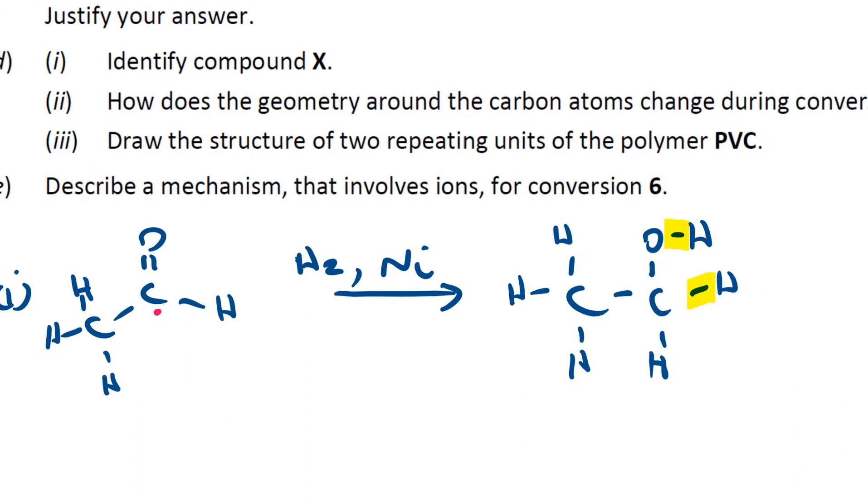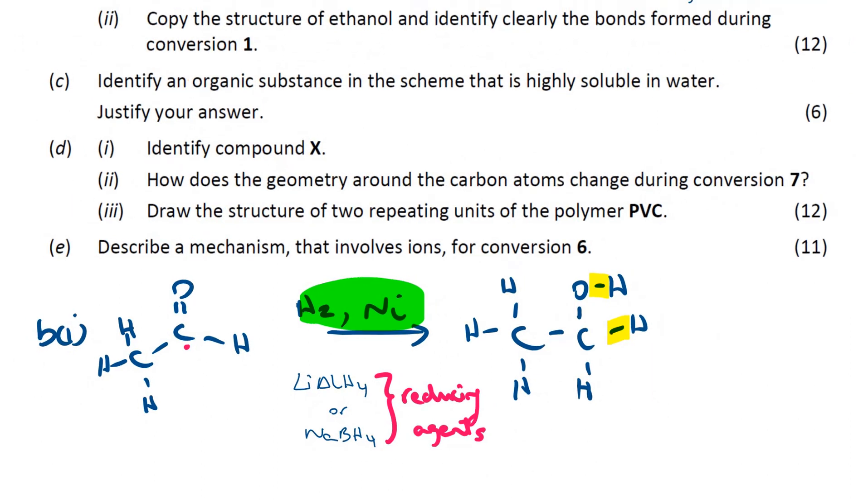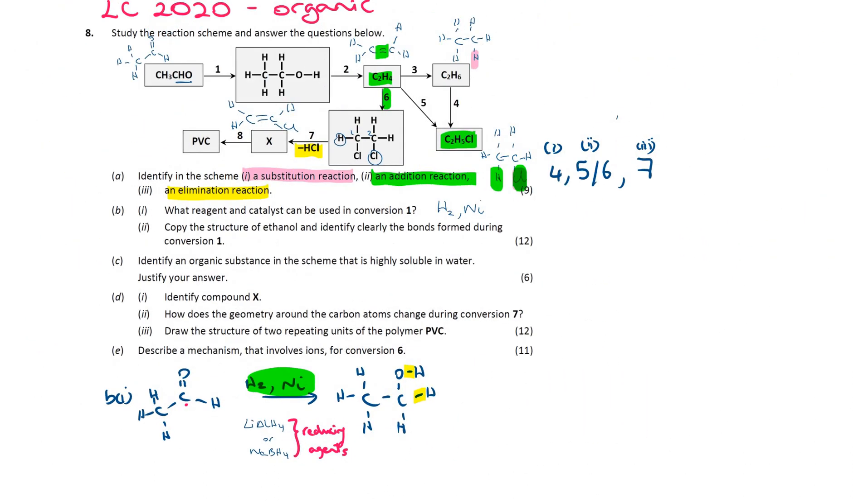I meant to say, actually, that other reagents you could use are lithium aluminum hydride or sodium borohydride. They're common reducing agents used in research. So, they are reducing agents. But, if you want to just remember one hydrogen and nickel, it works perfectly well. So they are the bonds that are formed during the reaction.